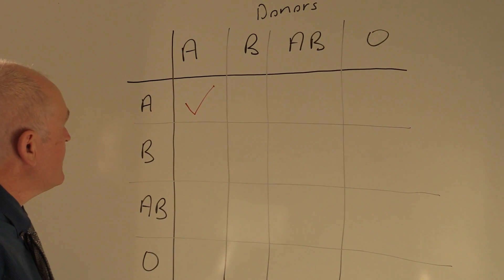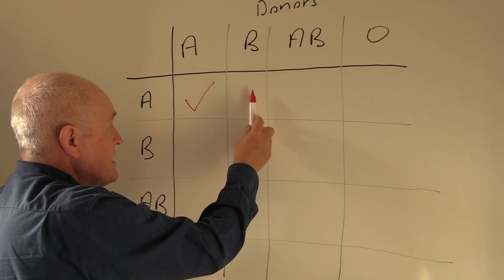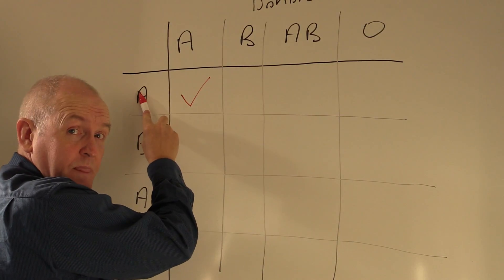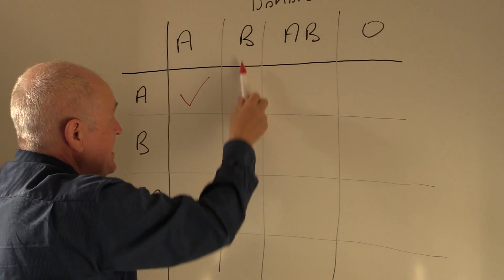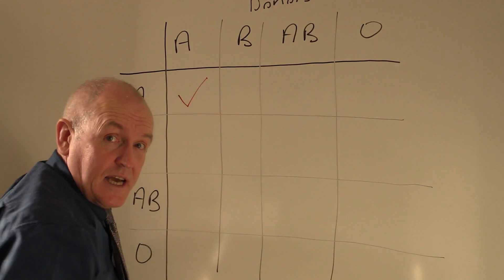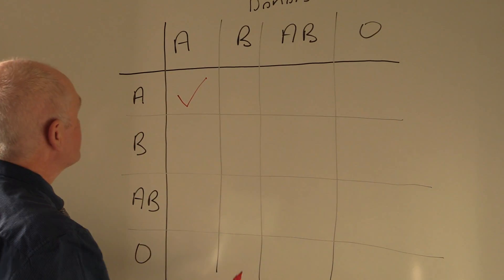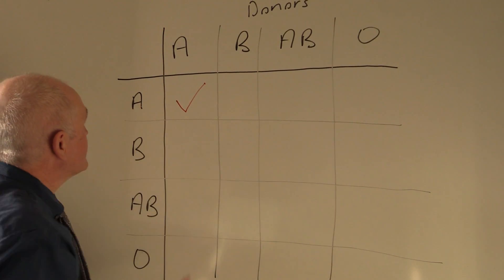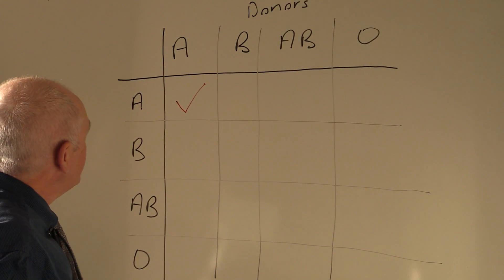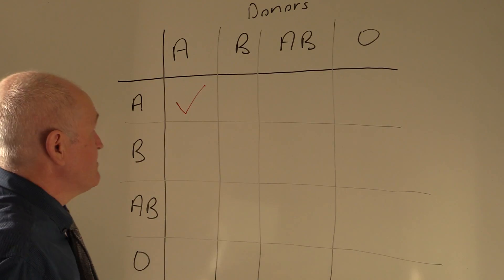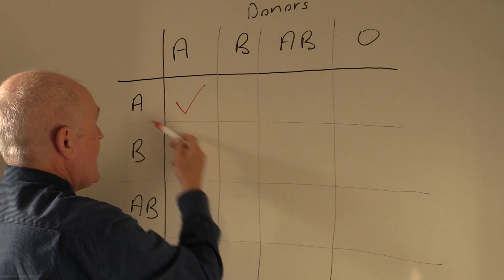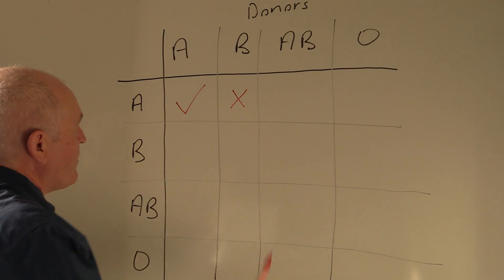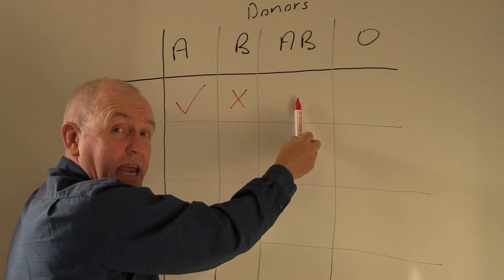If someone with blood group B tries to give to someone who is blood group A, the B antigens in the donated red cells will be agglutinated by the anti-B antibodies present in the group A blood plasma. So can B give to A? No, they can't.